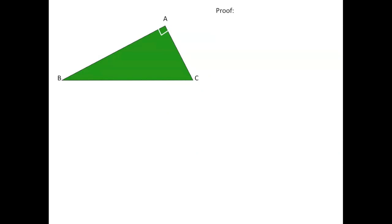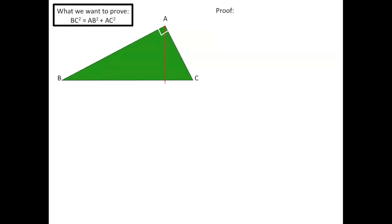Now back to our proof. What were we trying to prove? That BC squared is equal to AB squared plus AC squared. The first thing I'm going to do is draw a perpendicular line from A, labeled at point D. When I did this, I ended up with two smaller triangles, and both of these are also right-angled triangles because AD is a perpendicular line.